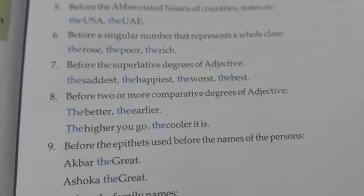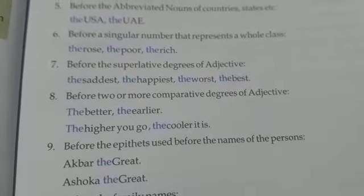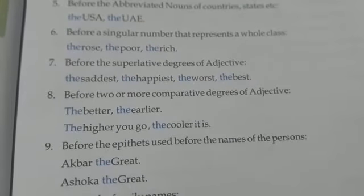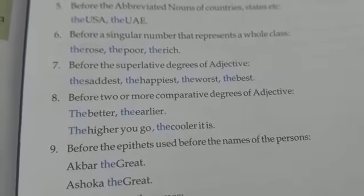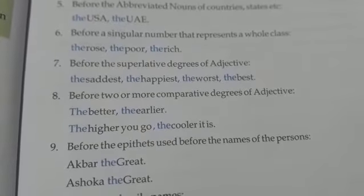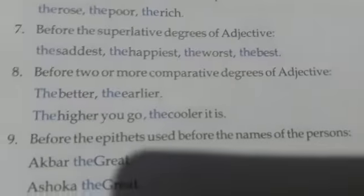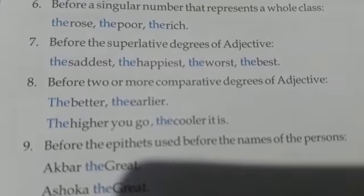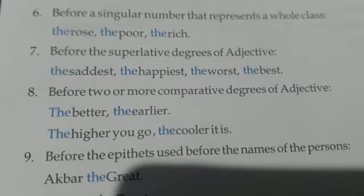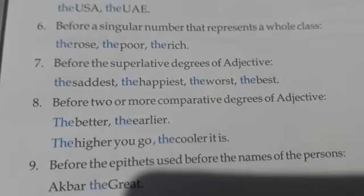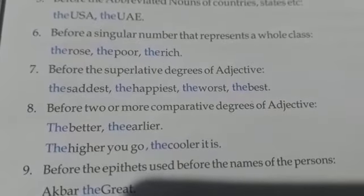Before two or more comparative degrees of adjectives — 'the better, the earlier' is one sentence meaning 'jitna jaldi ho, utna achcha hai.' Similarly, 'the higher you go, the cooler it is' is again one sentence joined with a comma — meaning 'jitna oopar jaate hain ham, utna thanda hota jaata hai.' You can see the full stop at the end.